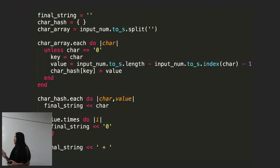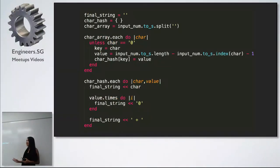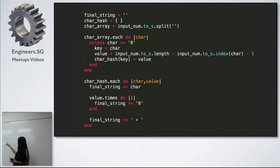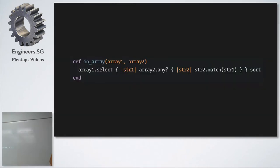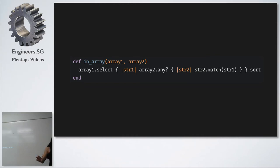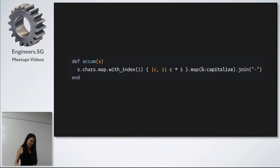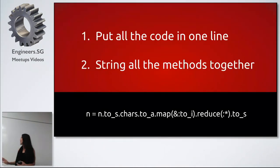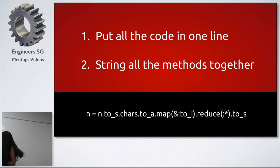When I was doing Code Wars, we had daily Code Wars sessions with the developers in the group. When I was coding, I was starting like this — I learned C++ before, so I'd do a for-loop with 'i equals' and so on. Then I realized all my colleagues were doing things much more concisely. I figured out that all you have to do is put all the code in one line and string all the methods and enumerables together. That's it — you'll look very Ruby-like.